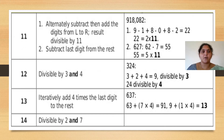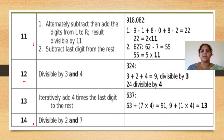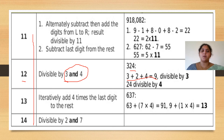Coming to 11, 12, 13, and 14: for 11, add alternate digits and check if the difference is a multiple of 11 or 0. For 12, check whether the number is divisible by both 3 and 4 — for 3, add all digits; for 4, check the last 2 digits and verify they are divisible by 4.